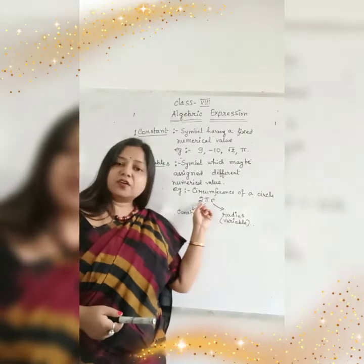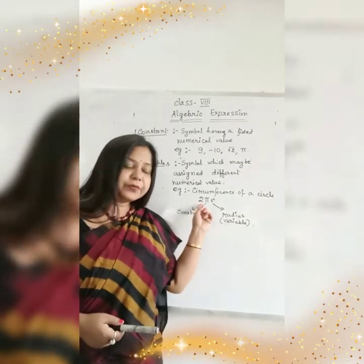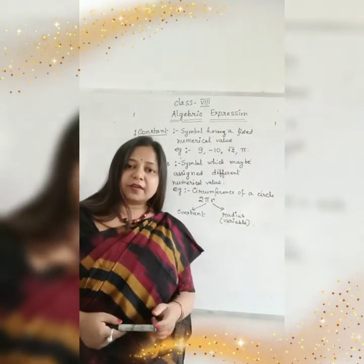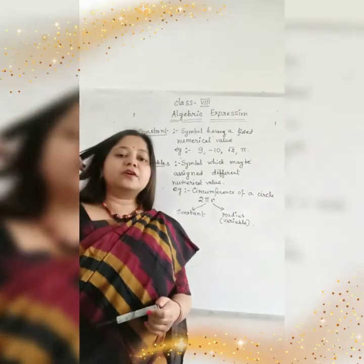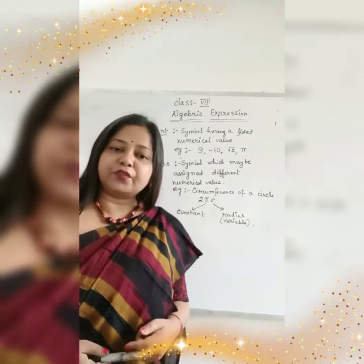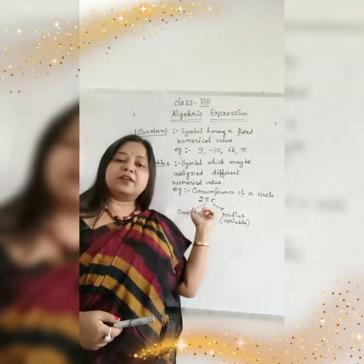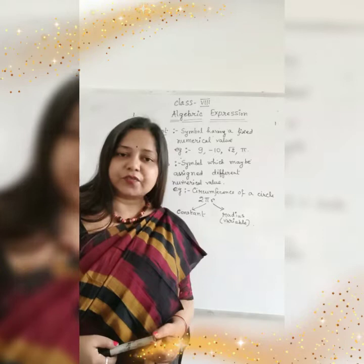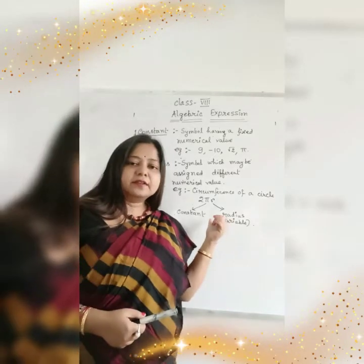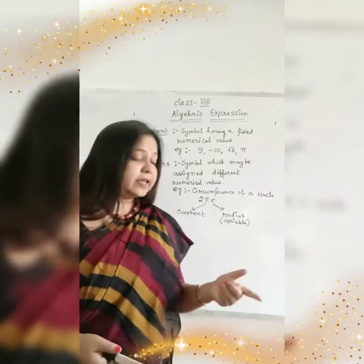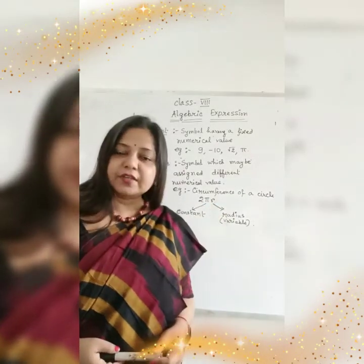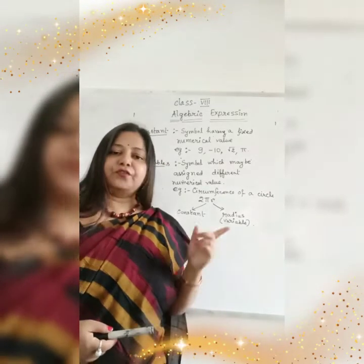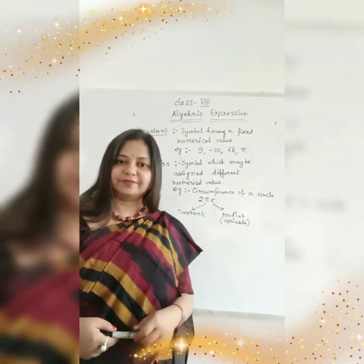So in 2πr, 2 is a constant number, a numerical number. Pi is also a constant number, but r is not a constant number. Why? Because by changing the radius, changing r, we can get different values of 2πr. Suppose if r, the radius of a circle, is 4, we will get a different value than if r's value is 7. So that means an Algebraic Expression is the mixture of variable and constant.